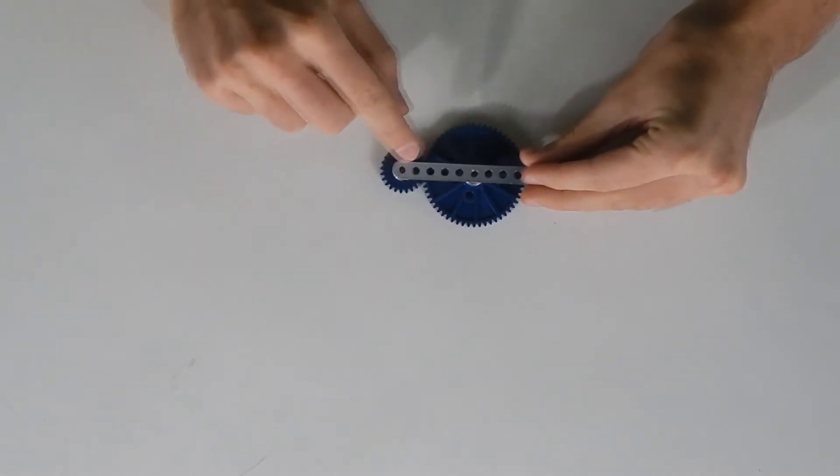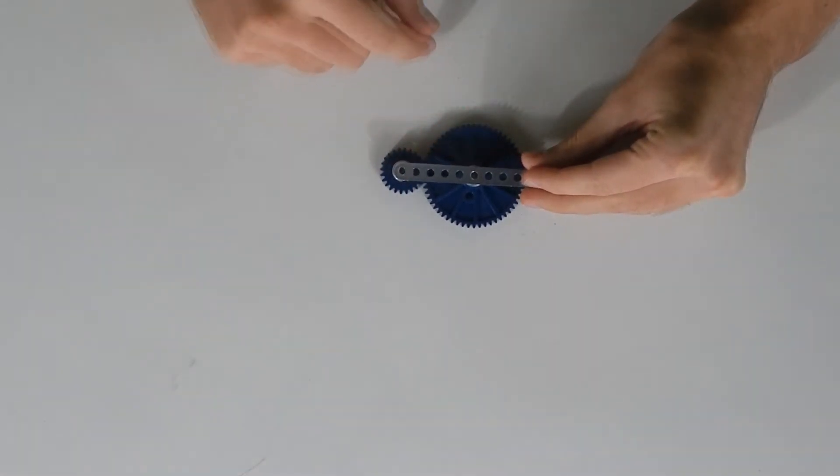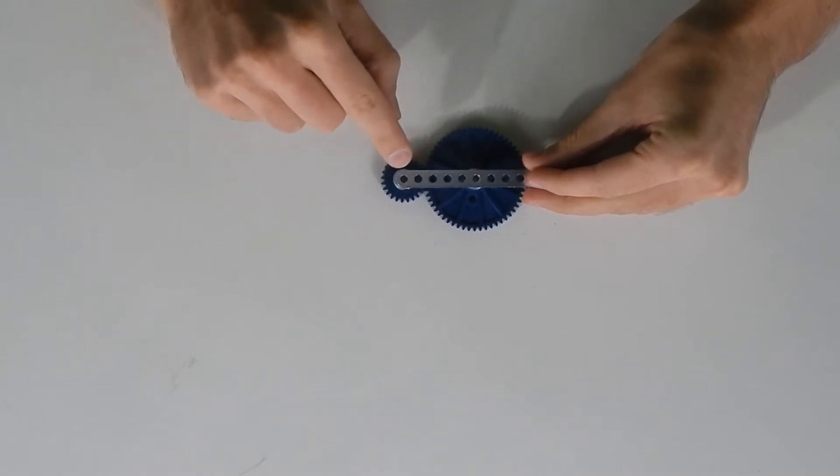So we count across here, we can see it has one, two, three, four, five, six holes. Now the cool thing about this is that the six total holes is what you need for a three, four, five triangle, because the distance from the center to the center is five holes.